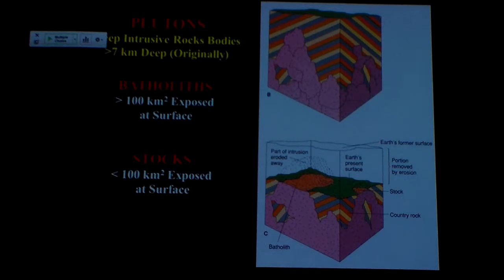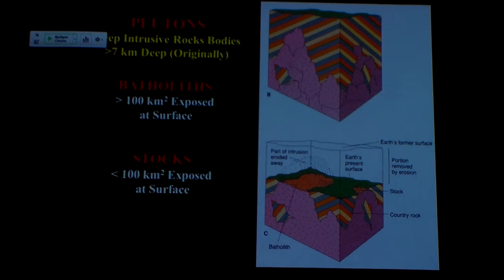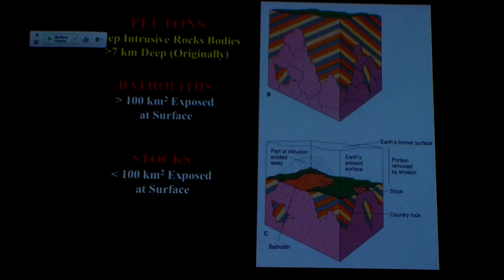Coarse-grained rocks don't form on the surface — they have to cool off slowly. When that rock gets exposed at the surface over an area larger than 100 square kilometers, we call that body a batholith. If it's less than 100 square kilometers, we call it a stock. Same thing — it just hasn't had enough of the covering rock removed to expose 100 square kilometers. A stock can become a batholith simply by definition as more is exposed and exhumed. We use those terms to give a quick sense of the size of the body.